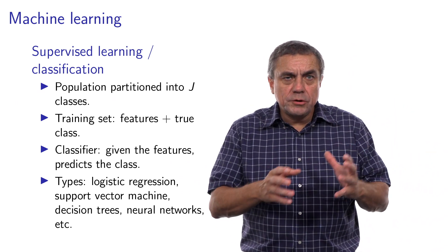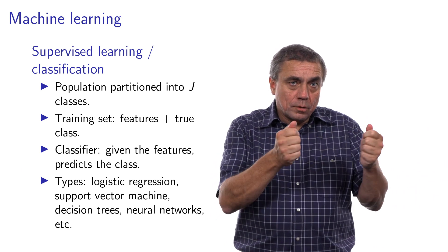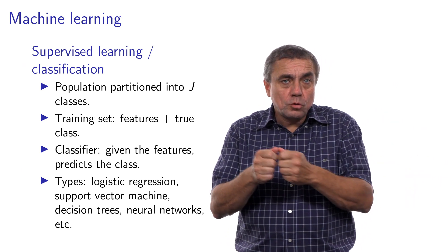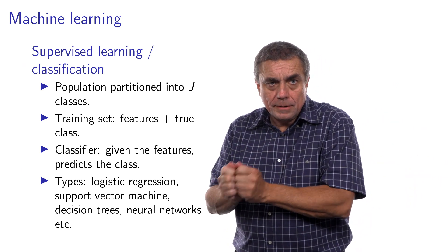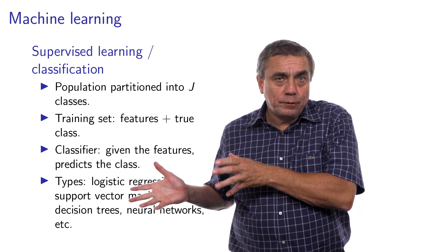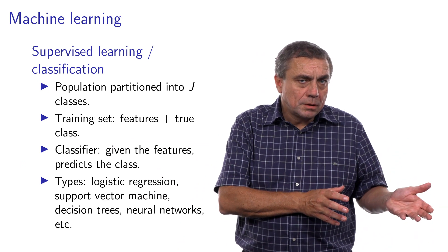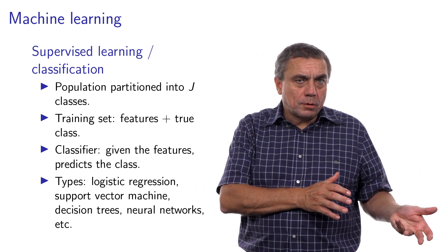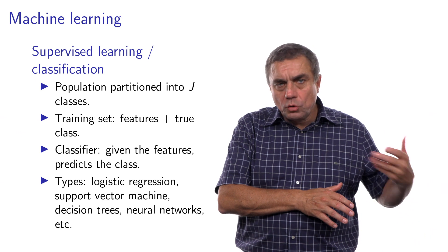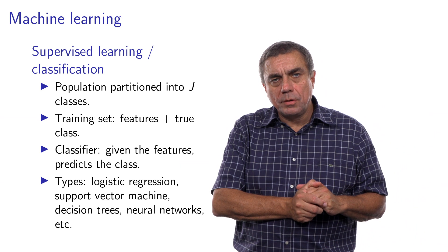They consider a training set, which consists of features and the true class. They use a classifier that, given the features, predicts the class. And there are several types: logistic regression, support vector machine, decision trees, neural networks, and so on. I encourage you to Google some of them to know more about them.